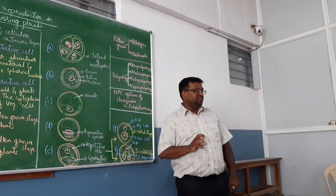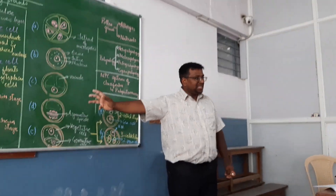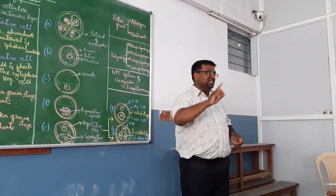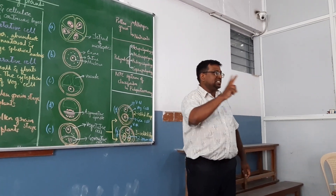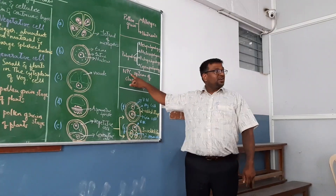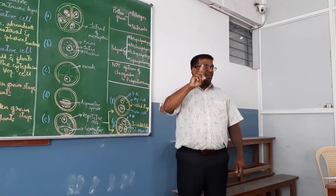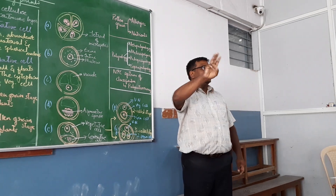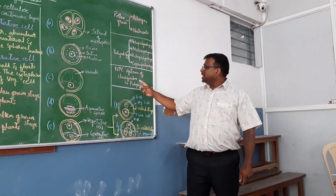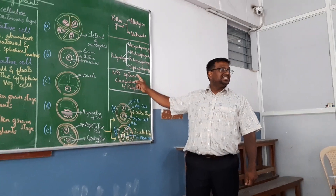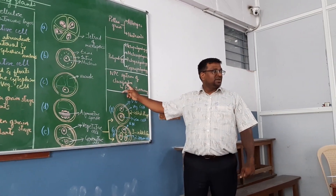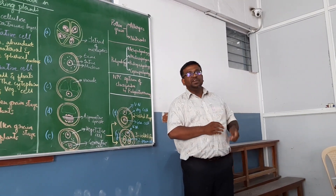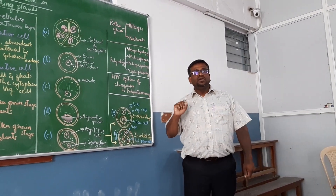There is the NPC system of classification. An aperture is an opening. Based on the number of apertures, position of apertures, and character of apertures, there is a classification of pollen grains. In palyno-taxonomy, they use this NPC system of classification. It is a very vast field — you have literature to classify plants based on the type of pollen grains.